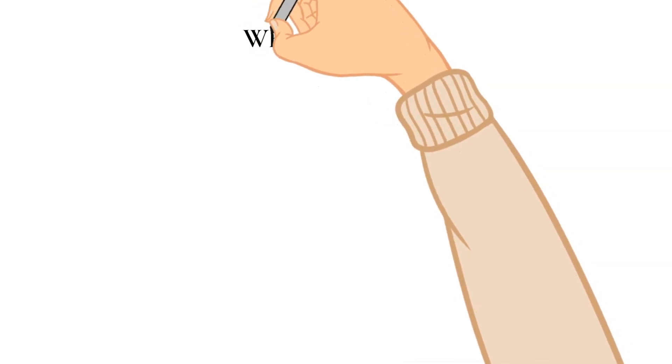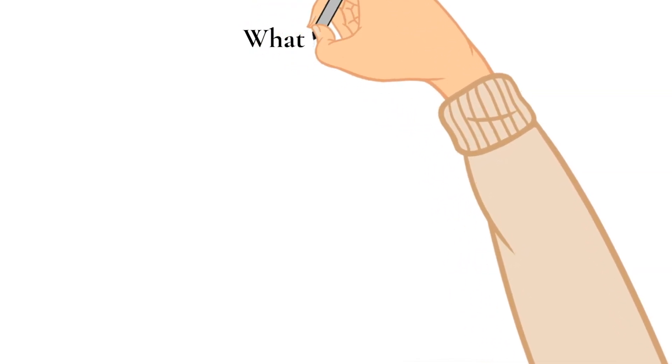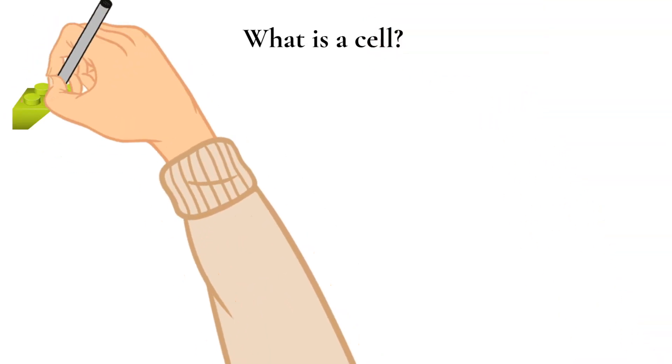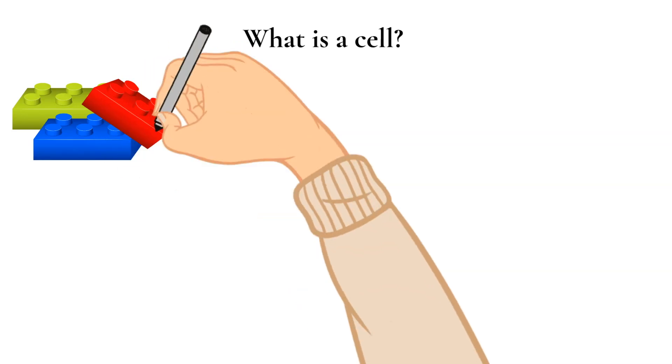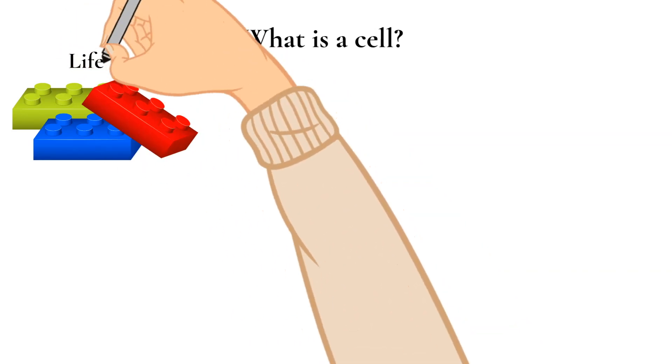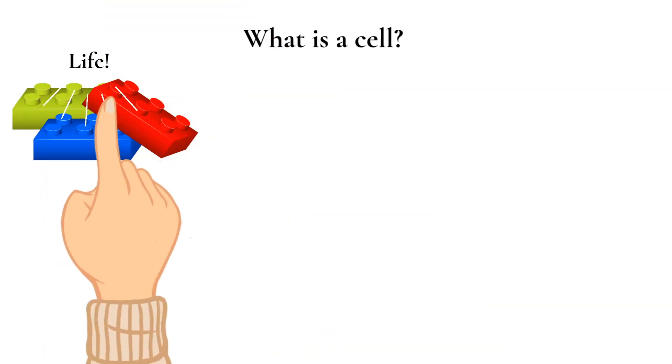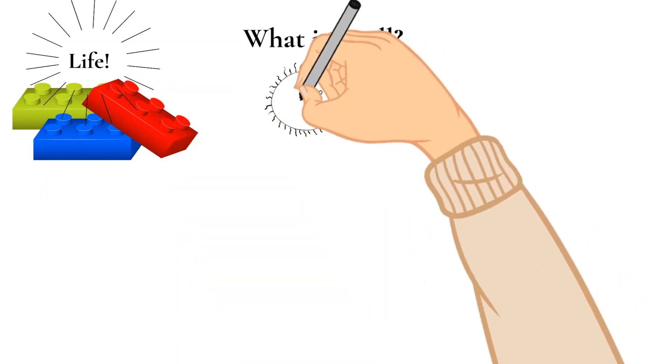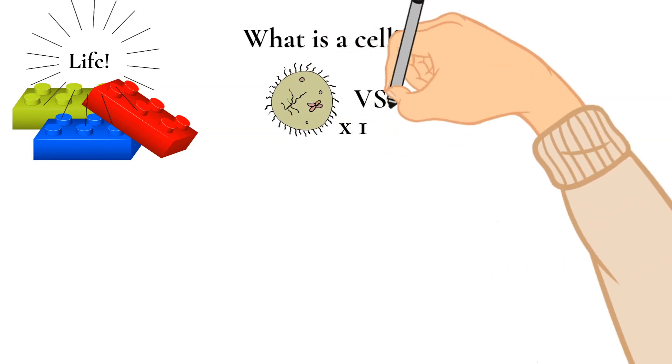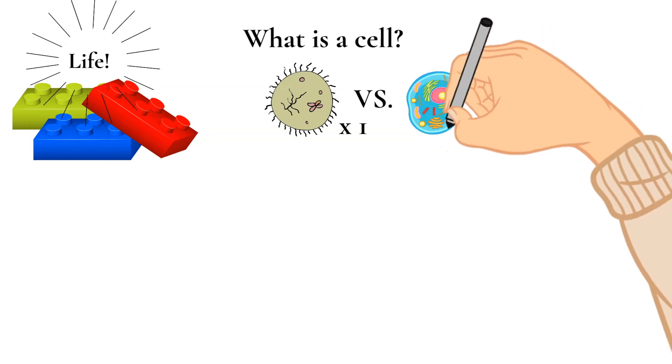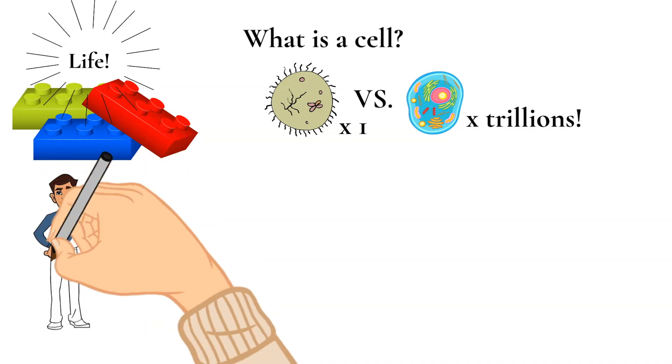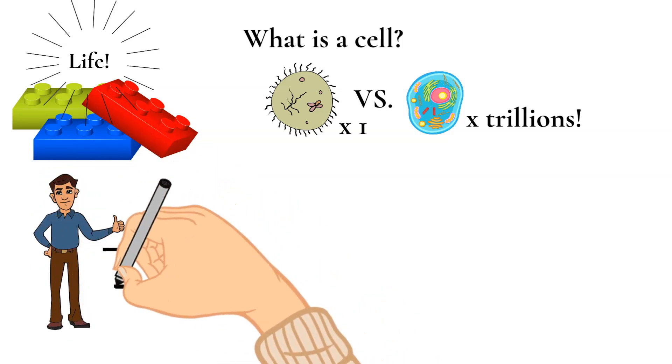This week, we're jumping into talking about some parts of an animal cell. But before we do that, we really need to talk about what a cell is. Well, a cell is the basic unit of life. Some organisms can be made up of just one cell, like bacteria, which we talked about last week. And others are actually made up of trillions of cells. You and I are made up of cells too.